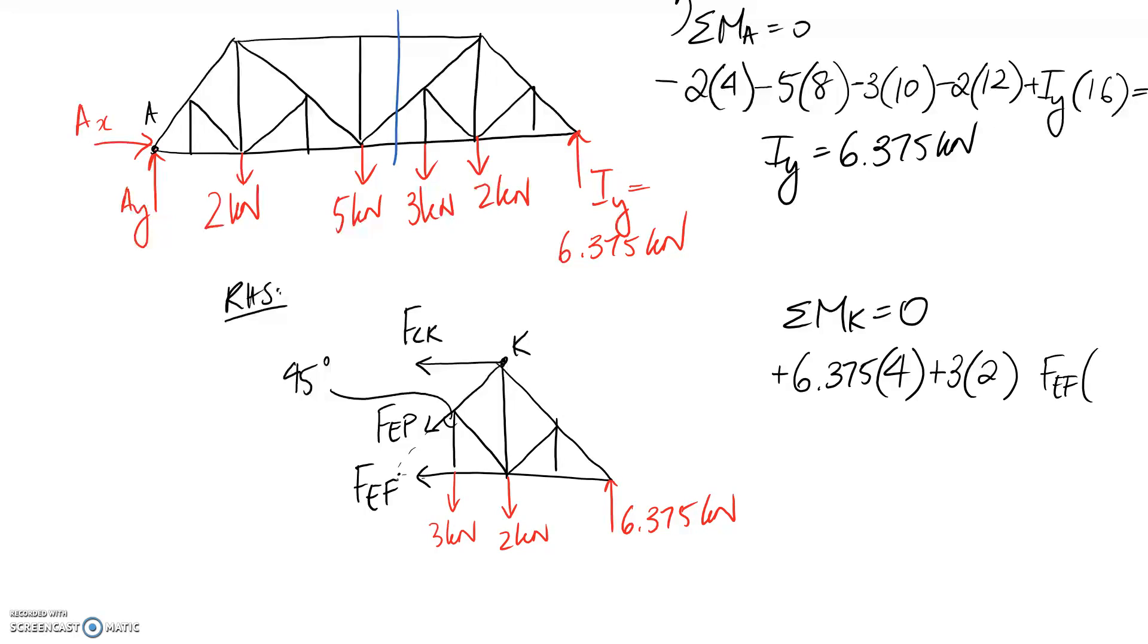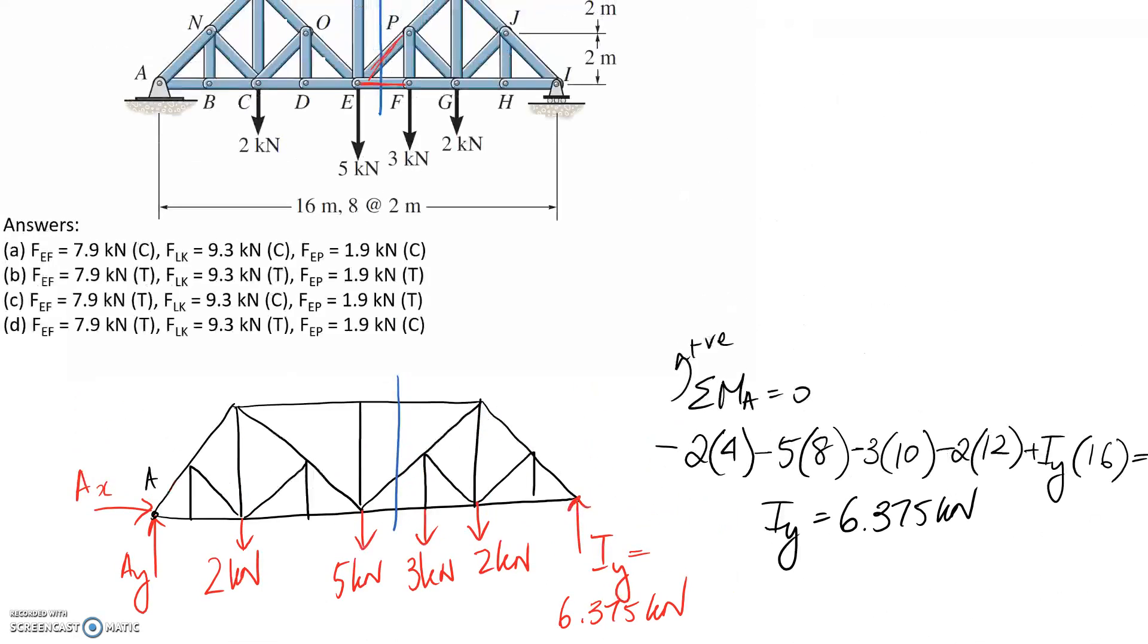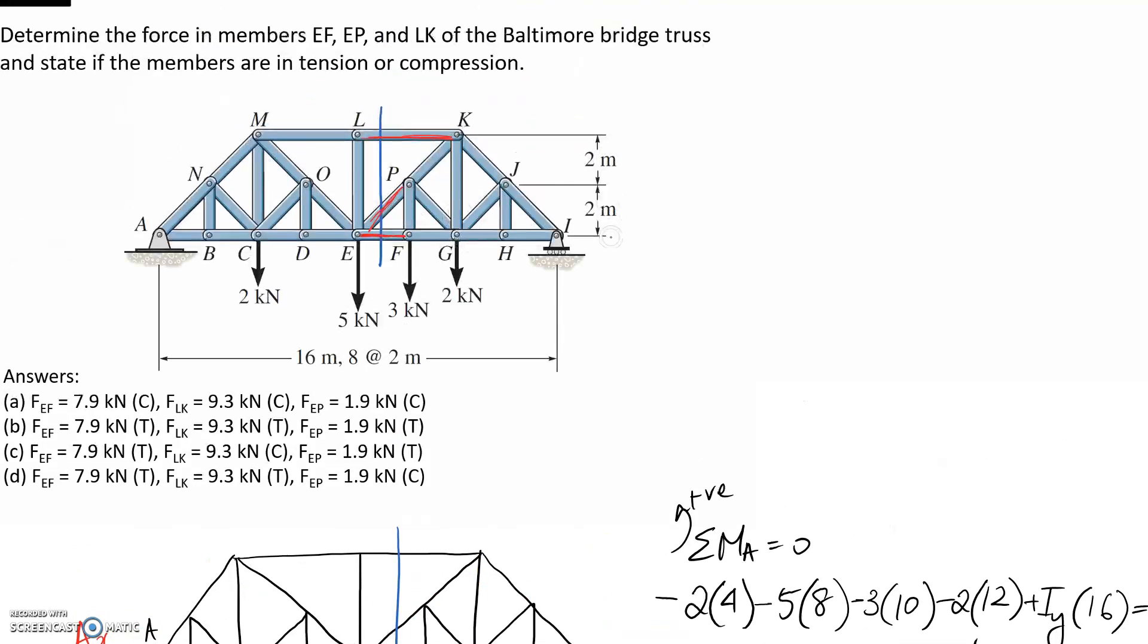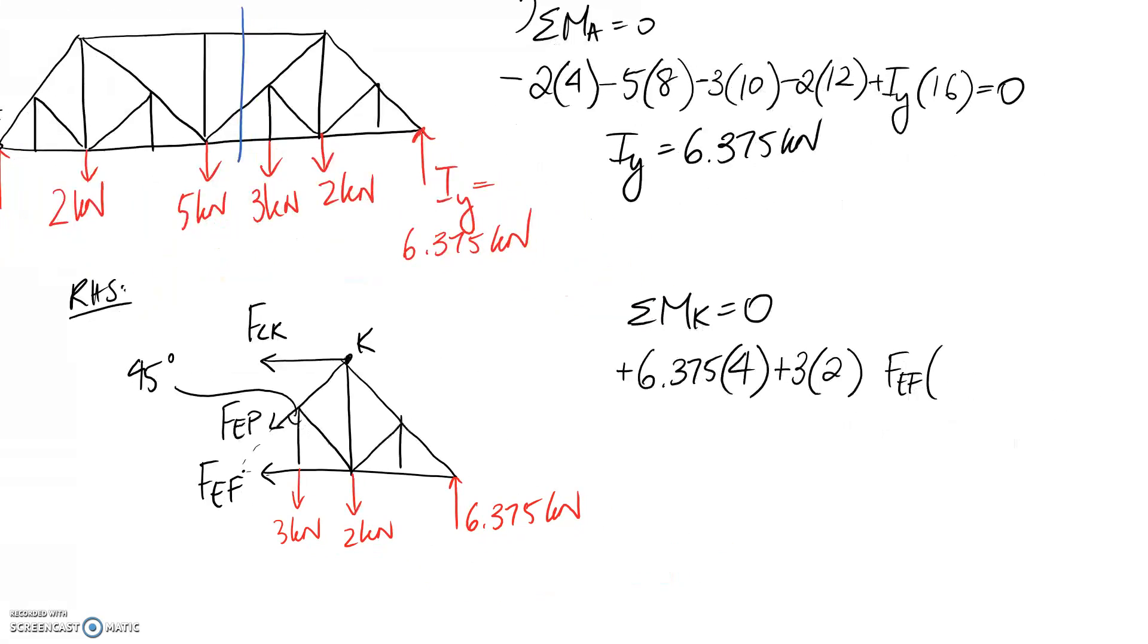Finally we have FEF. The distance we need to multiply it by is the distance from its line of action here back up to K, which is basically the height of the truss. The height of the truss here is 4m. We then need to consider direction, and this is going to try and go clockwise about K, so it should be negative. If we go through and solve for FEF, it comes to 7.875 kN. It comes out positive, which means the direction is correct. So we drew this pulling away from the joint, so it's in tension.